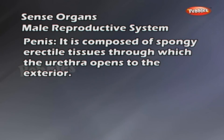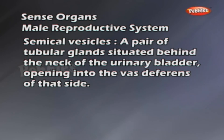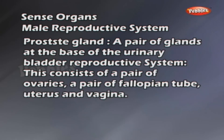Seminal vesicles: a pair of tubular glands situated behind the neck of the urinary bladder, opening into the vas deferens on that side. Prostate gland: a pair of glands at the base of the urinary bladder.